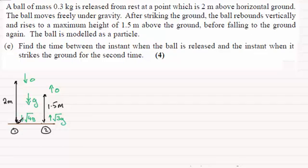We found out in part A that the speed it hit the ground was root 4g. Then in part B after that first bounce it left with a speed of root 3g. Travelled up one and a half meters, came to instantaneous rest and now it's going to come back down again.